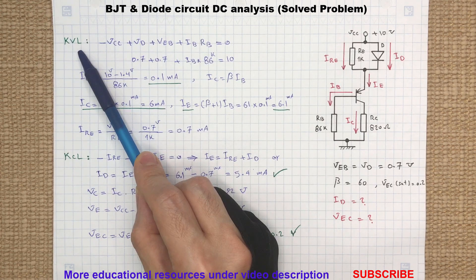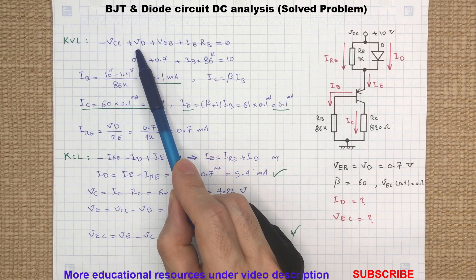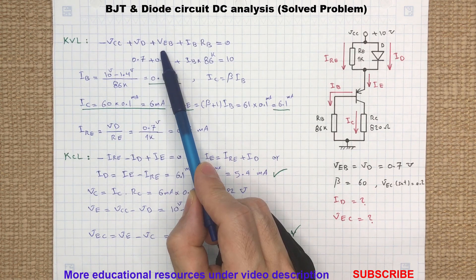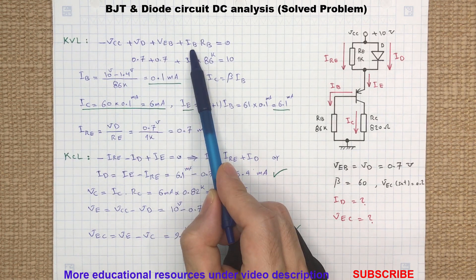Let's start with writing a KVL, Kirchhoff voltage law, from the supply voltage, voltage drop across the diode, emitter-base terminals, and the base resistor.